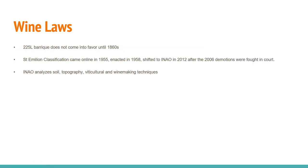For wine laws, the 225-liter barrique didn't come into favor until about the 1860s — after the Left Bank classifications were written. The Saint-Emilion classification came online in 1955 and was enacted in 1958. It eventually shifted to the INAO in 2012 after the 2006 demotions were fought in court. The INAO now analyzes soil, topography, and viticultural and winemaking techniques.